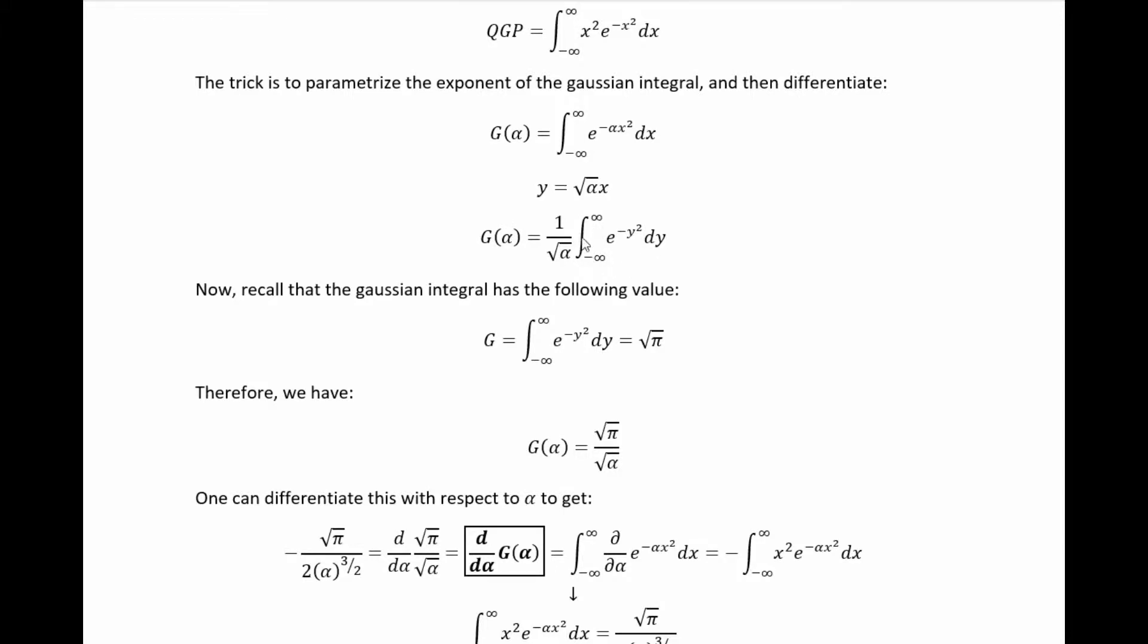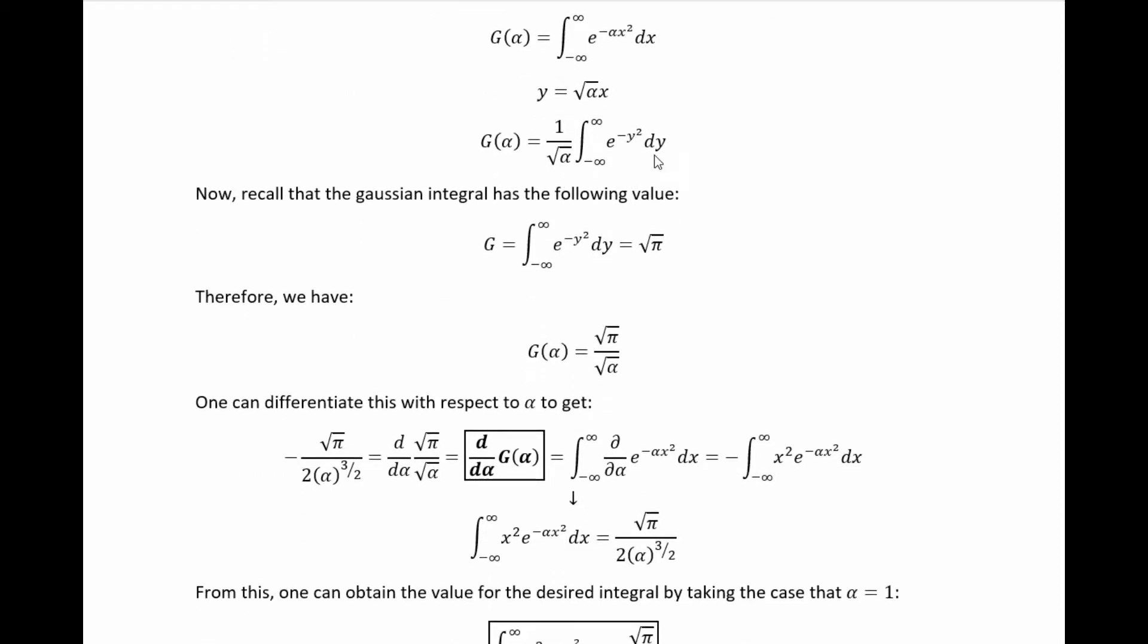then we can rewrite this as e to the negative y squared dy, the integral over that from negative infinity to positive infinity, times this pre-factor of one over root alpha coming from the integration measure. Now we see the straight-up Gaussian integral right there,